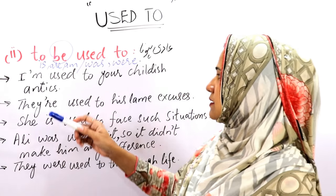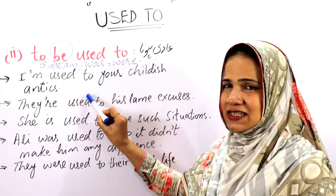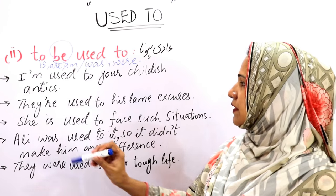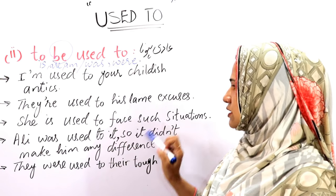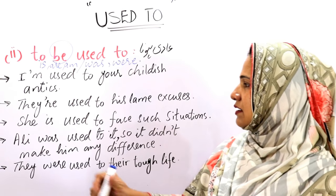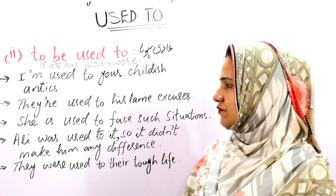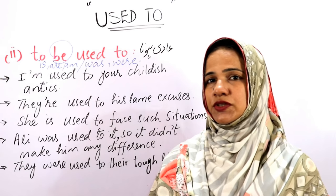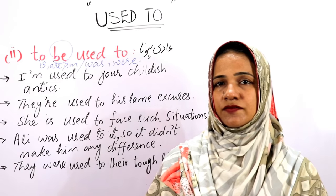If you want to change them into interrogative sentences, they will go like this: 'Am I used to your childish antics?' 'Are they used to his lame excuses?' 'Is she used to facing such situations?' 'Was Ali used to it?' 'Were they used to their tough life?'